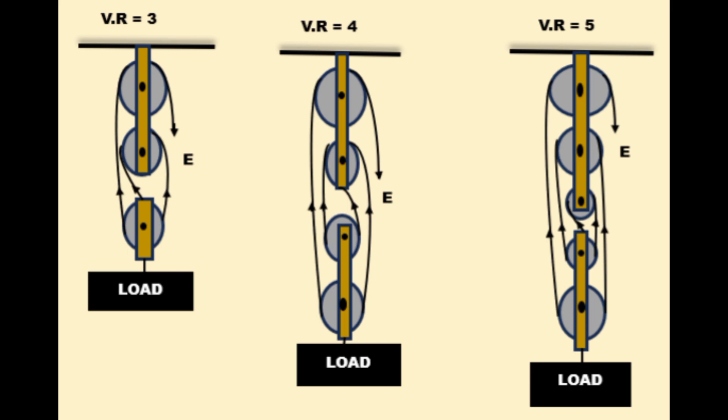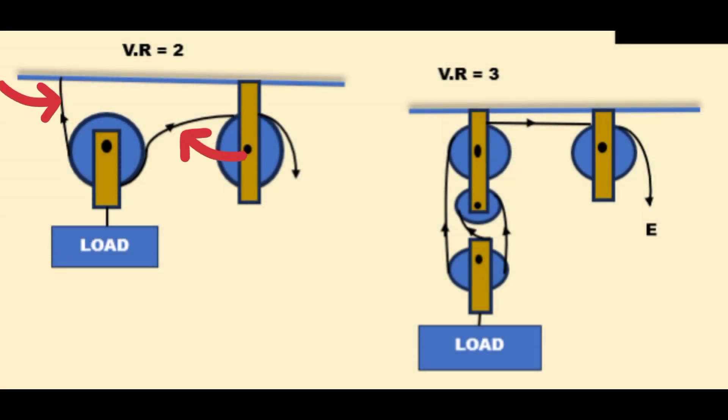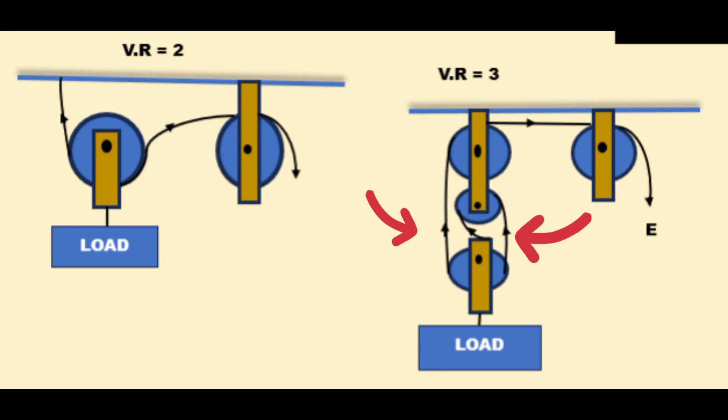We also have velocity ratio two for the colored ones where the second pulley is just used to change the direction of the effort. Then we have velocity ratio three again — three strings carrying the load, where the extra pulley is just used to change the direction of the effort. That marks the end of today's session — see you in the next video.